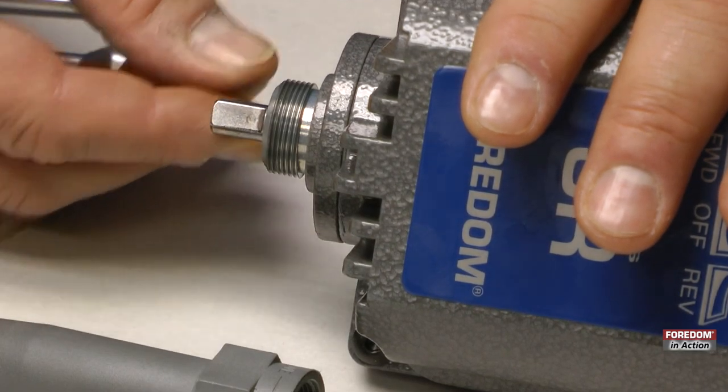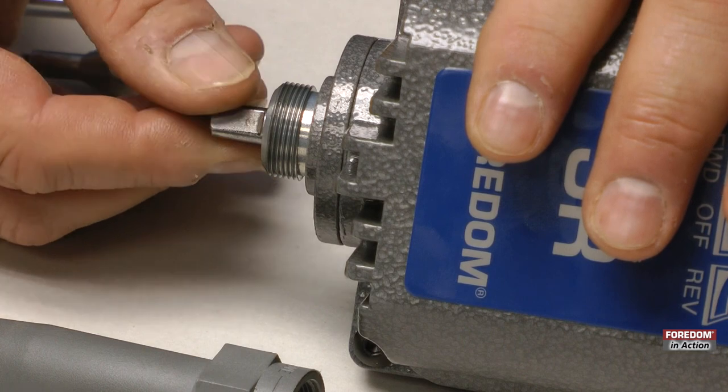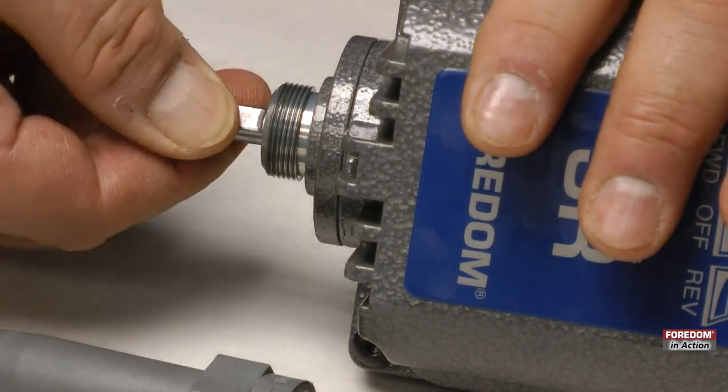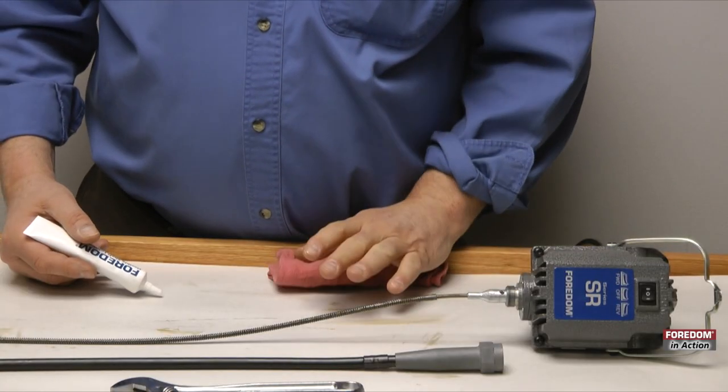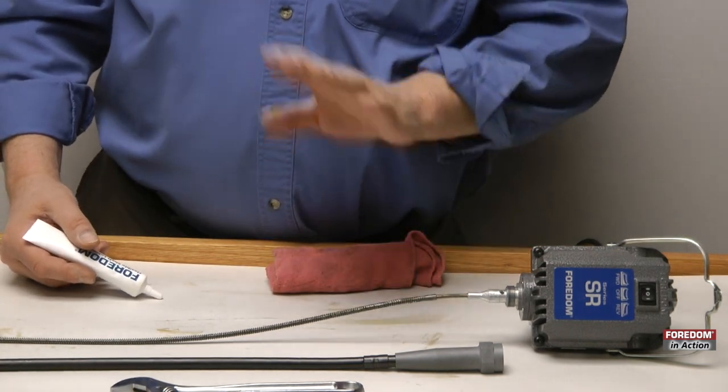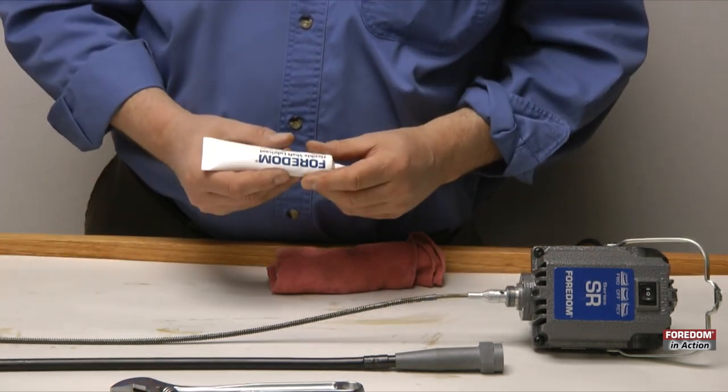If you notice, this motor shaft has got a flat area on it, that's where the set screw goes. The shaft I put on was new and already greased. In your case, you're going to need to re-grease the shaft.